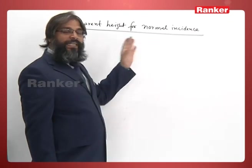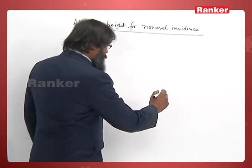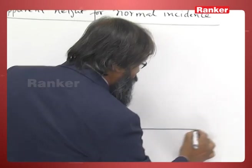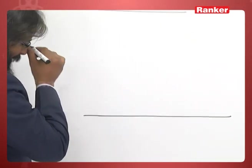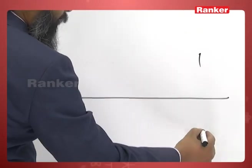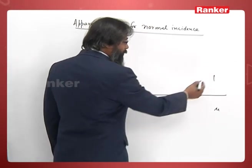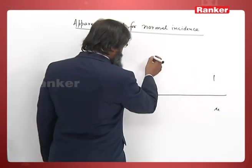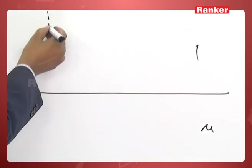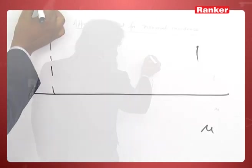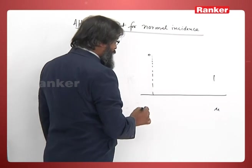So apparent height for normal incidence. Suppose this is a surface which separates two media. One is air and here it has a refractive index μ. Suppose this is air and this is water, and here we have an object O.